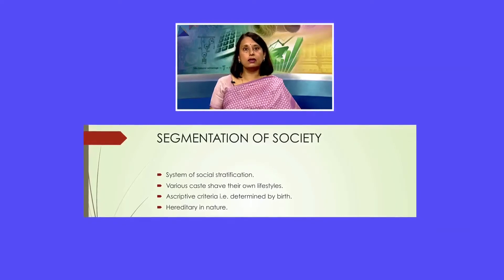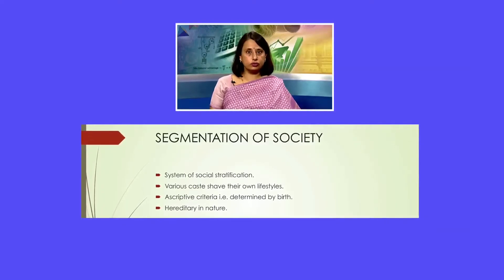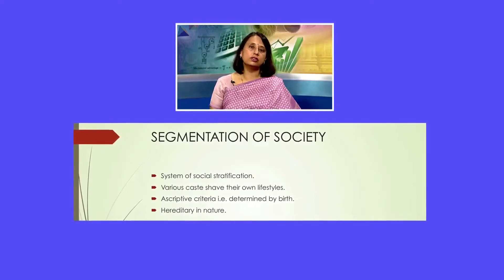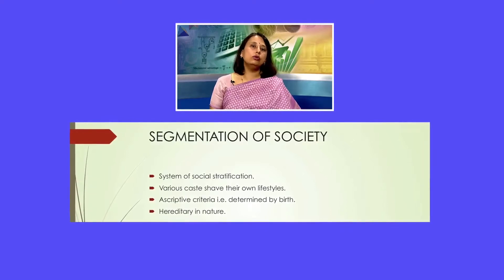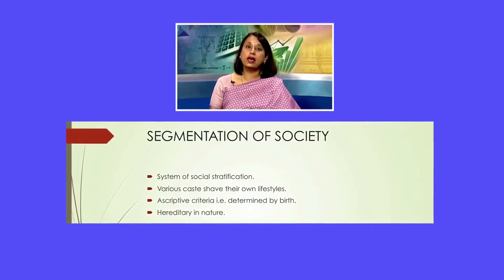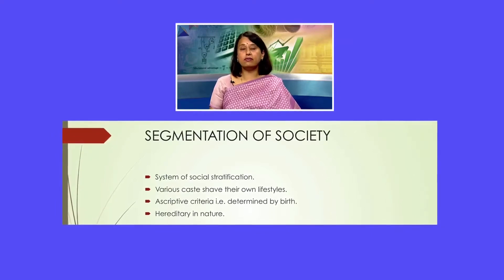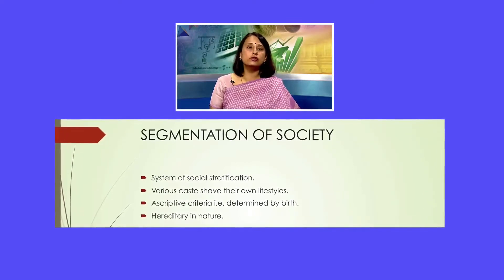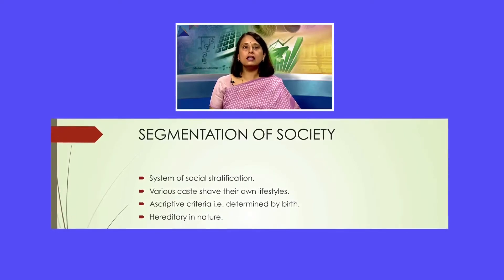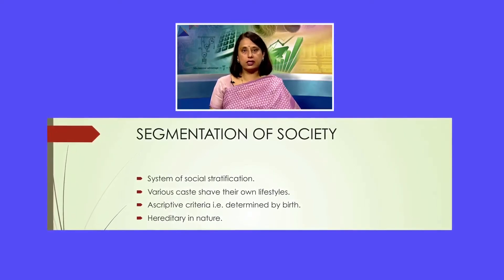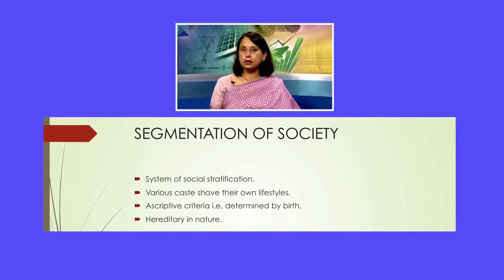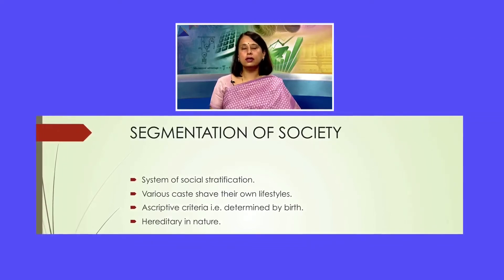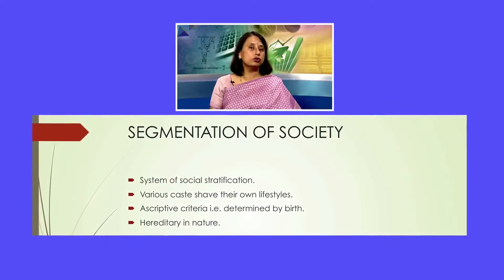What is meant by the segmentation of society? Think of an earthworm which has segments — just as the earthworm is divided into different parts, we too in society have different caste groups. We have various Varnas, various Jatis, and each of the Varnas, castes, and Jatis has their own lifestyles. In the caste system, ascription is the major criteria — your caste is determined by birth and you cannot change it throughout your life. The caste to which you belong is something you inherit; it is given to you by birth.